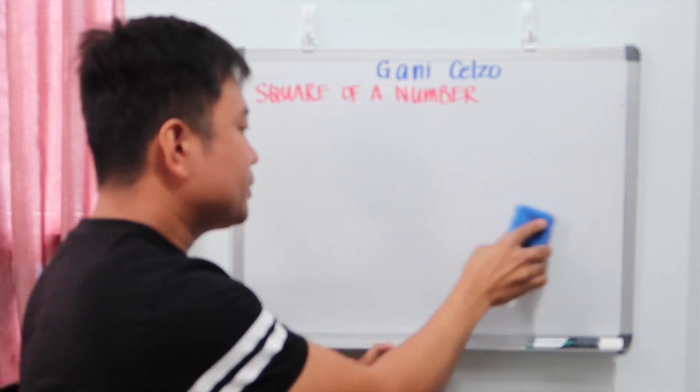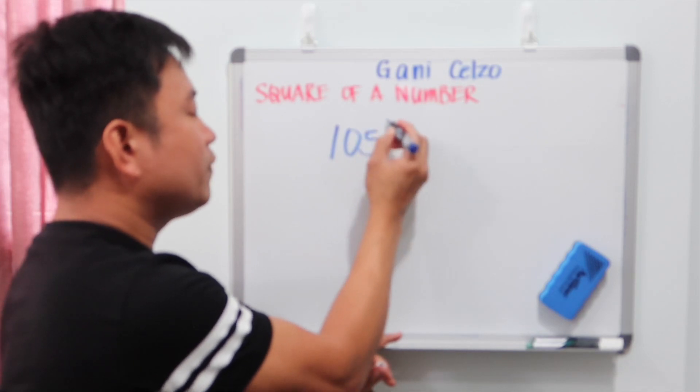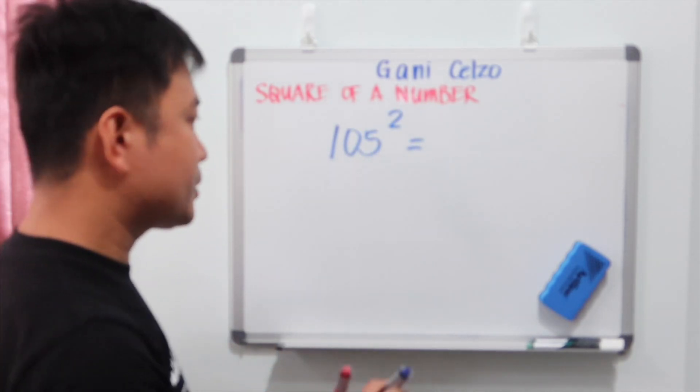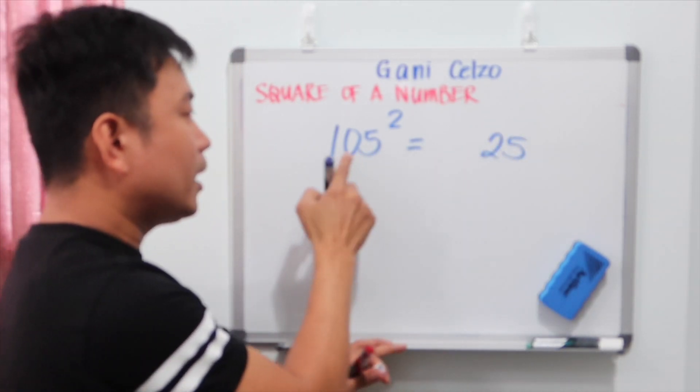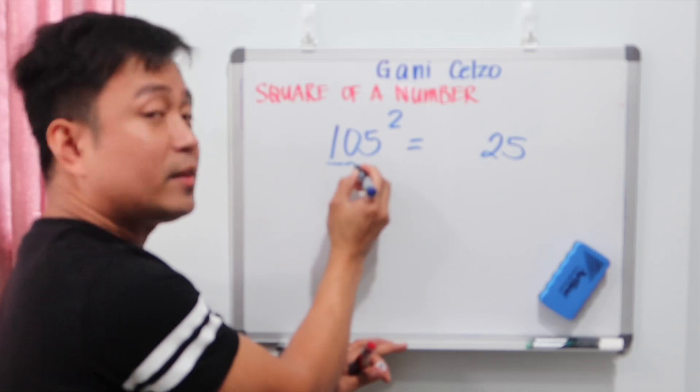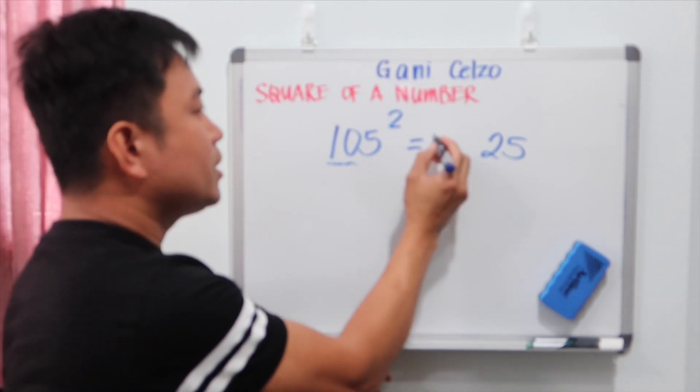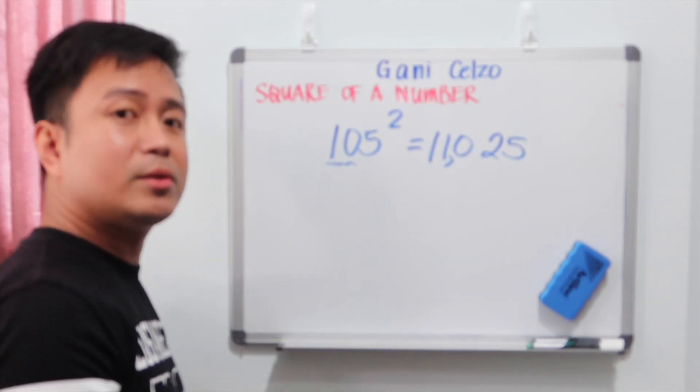If you have numbers, for example, a three-digit number, a three-digit number 105, square it, you can use the same concept. The last two numbers is, again, 25. And instead of 10 times 10, we need to do 10 times 11, which is 110. So that is 11,025.